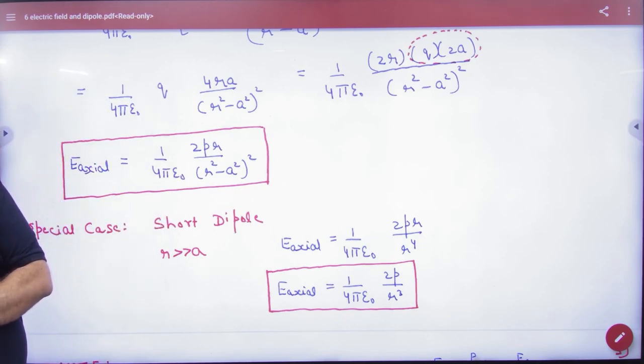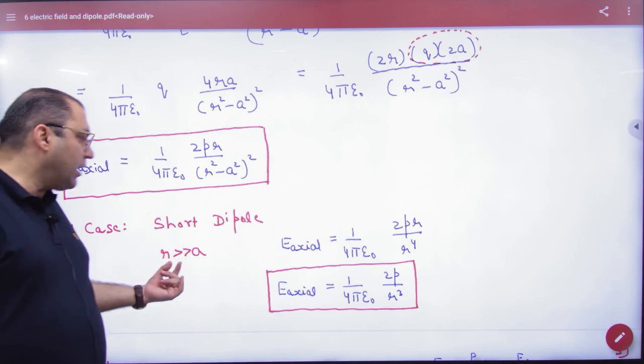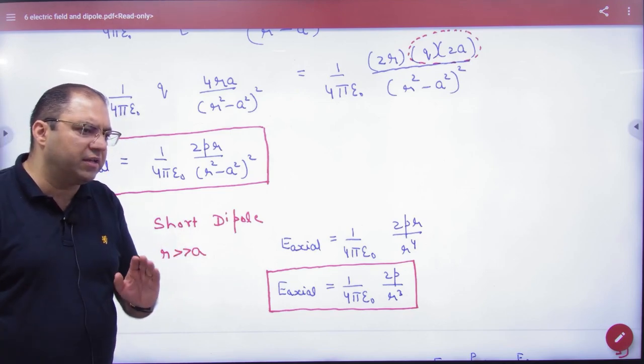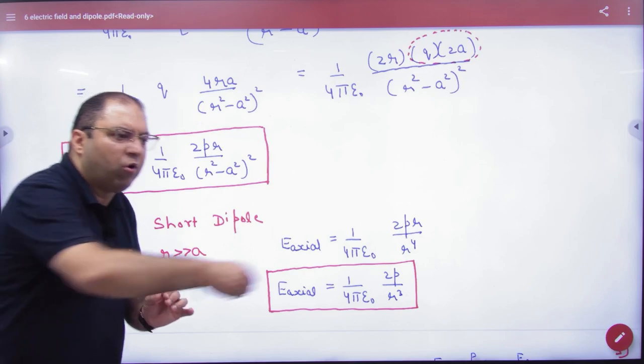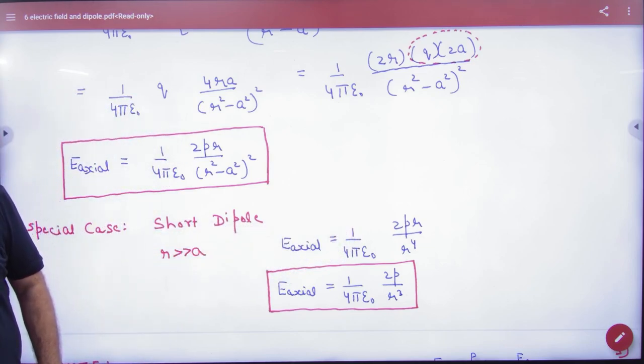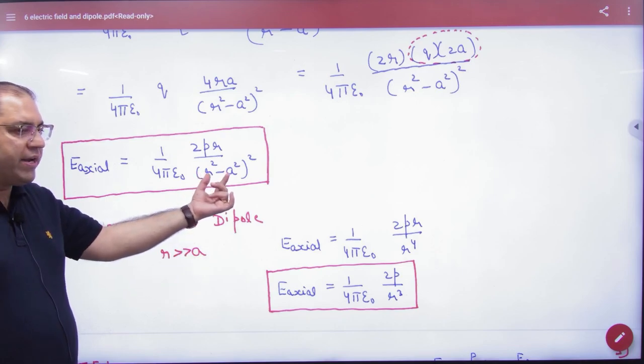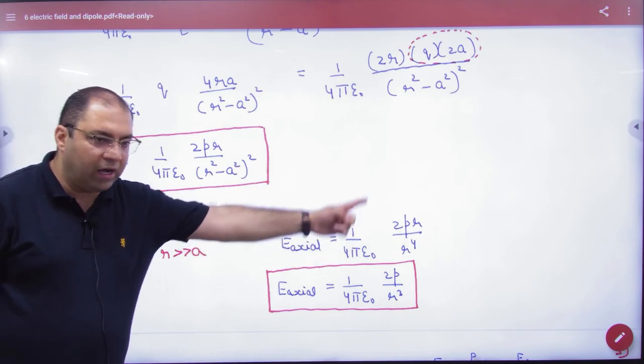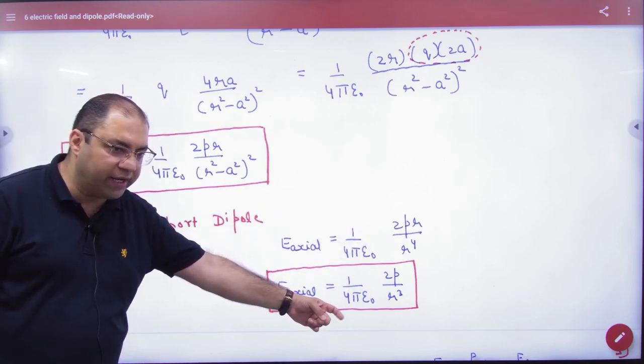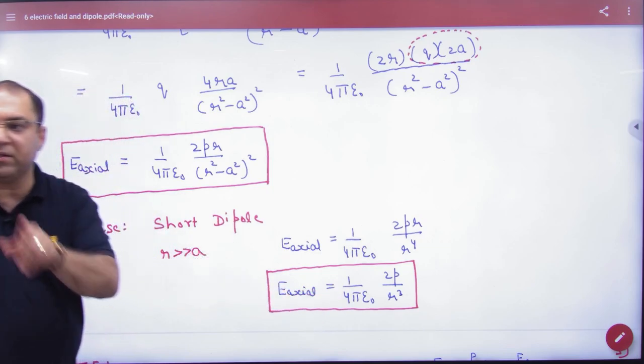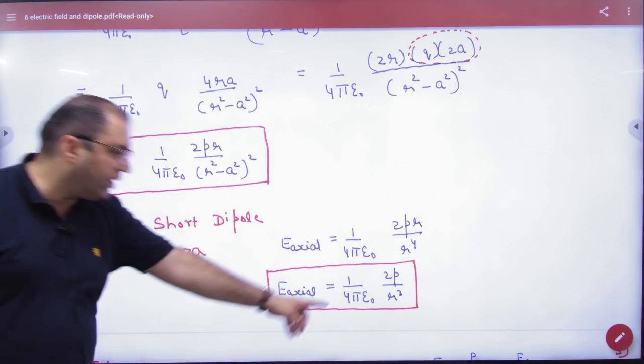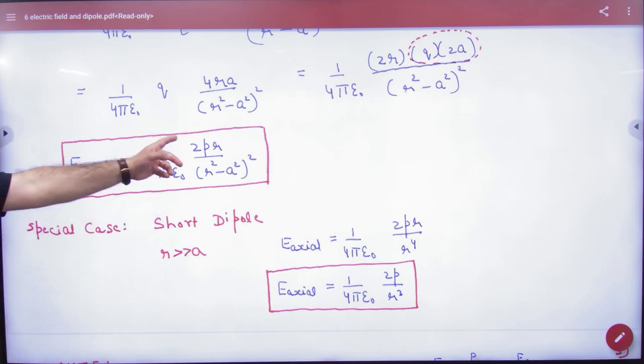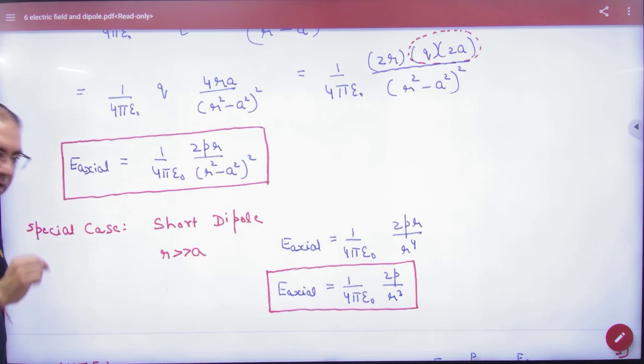Short dipole: when r is very big and distance 2a is very small. When r is much greater than a, a² becomes negligible. So the formula becomes E = 1/(4πε₀) × 2P/r³. Note this: for a short dipole, the electric field is inversely proportional to r³.